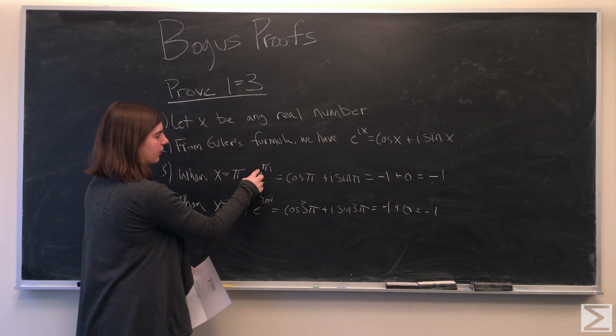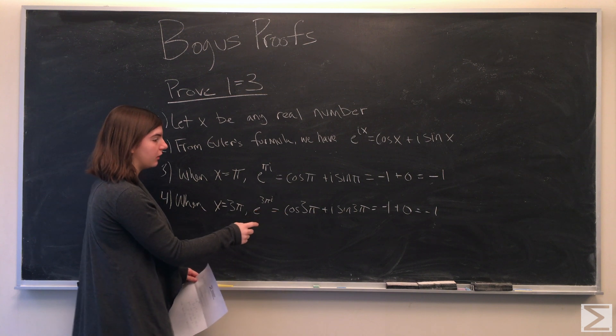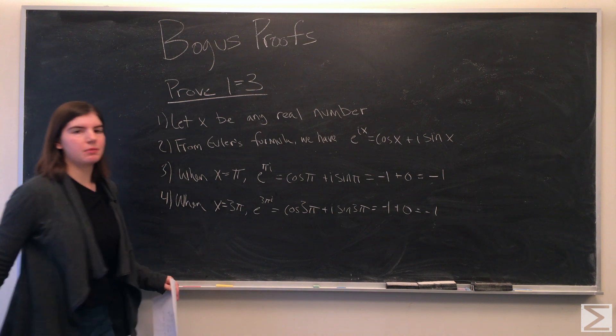Since e to the pi i is equal to negative 1, and e to the 3 pi i is equal to negative 1, we can conclude that e to the pi i is equal to e to the 3 pi i.